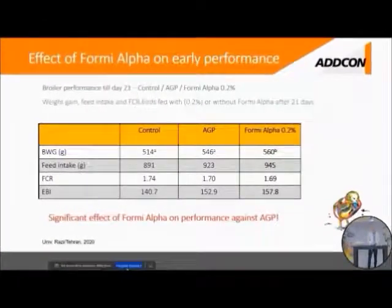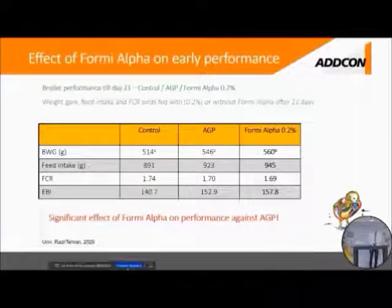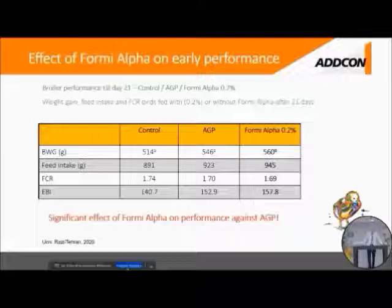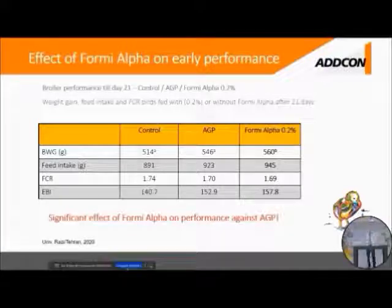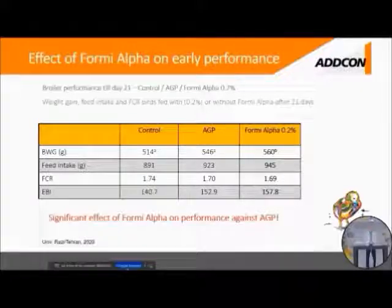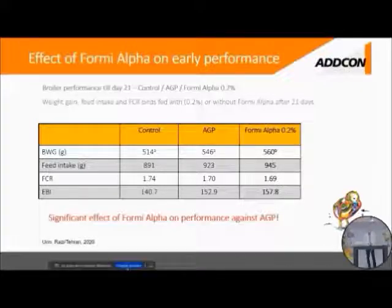One of the earliest studies we did with Formi Alpha was at the end of 2020, looking into early broiler performance until day 20-21. Since this was done outside Europe, antibiotic growth promoters were included as a positive control. We ran it against a negative control, a positive control, and the Formi Alpha group at 0.2%. Regular performance parameters were significantly improved, even compared against an antibiotic. This suggests it can be used as an antibiotic replacement when used in proper dosages.